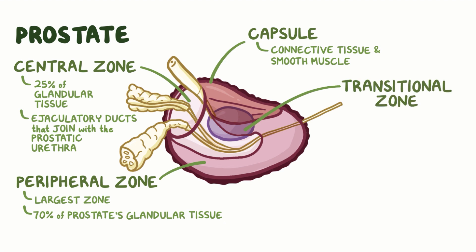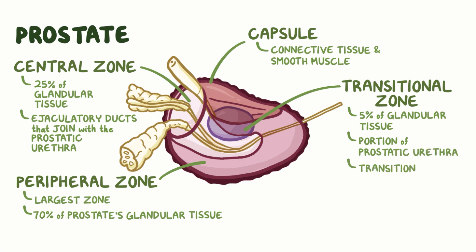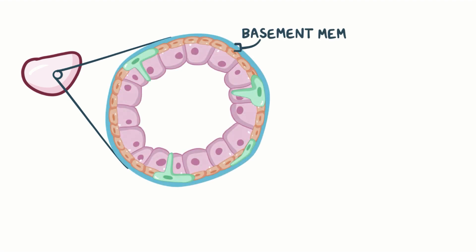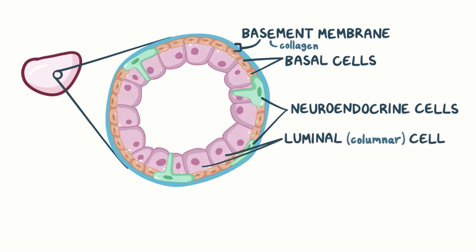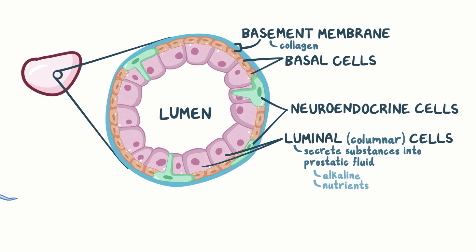Last is the transitional zone, which contains around 5% of the glandular tissue, as well as a portion of the prostatic urethra. The transitional zone gets its name because it contains transitional cells, which are also found in the bladder. At the microscopic level, each of the tiny glands that make up the prostate is surrounded by a basement membrane made largely of collagen. Sitting within that basement membrane is a ring of cube-shaped basal cells, as well as a few neuroendocrine cells interspersed throughout. Finally, there's an inner ring of luminal columnar cells, which are within the lumen or center of the gland. Luminal cells secrete substances into the prostatic fluid that make it slightly alkaline and give it nutrients which nourish the sperm and help it survive in the acidic environment of the vagina.